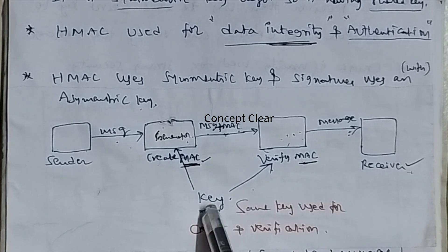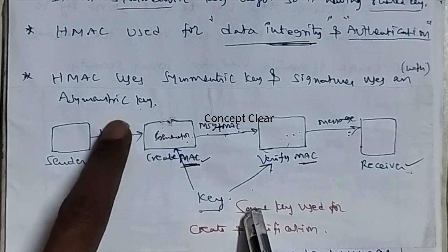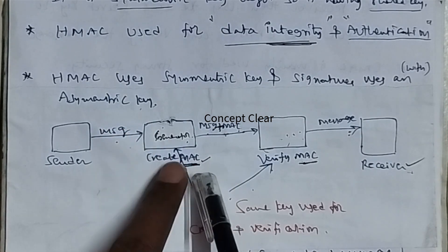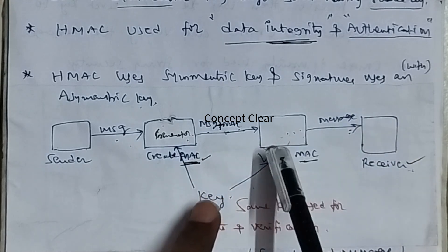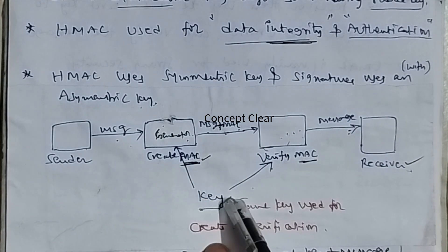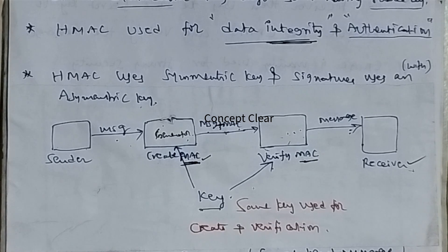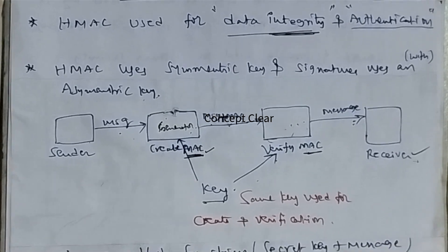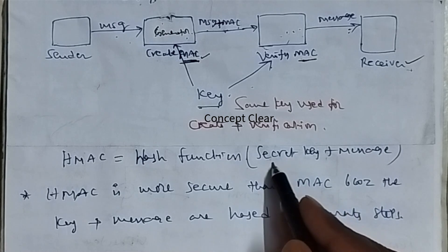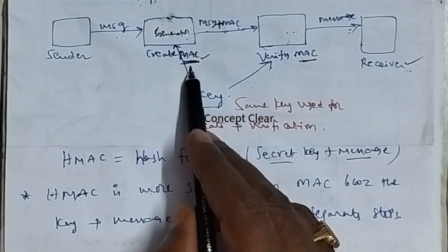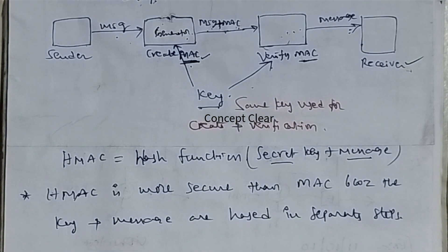The sender sends a plain text message, and with the help of the secret key the MAC code is created. The message plus MAC code is delivered over the network to the receiver side, where the MAC code is verified with the same key and the message is displayed. HMAC is defined as a hash function of the secret key plus the message.